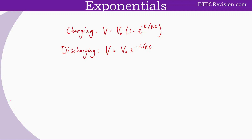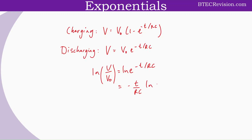Let's start by dividing both sides by V₀: V/V₀ = e^(−t/RC). Then we take the natural log on both sides. Using the power rule we bring the power down, giving us −t/RC times ln(e), which cancels out. Multiplying both sides by RC and by −1 gives us t = −RC·ln(V/V₀).